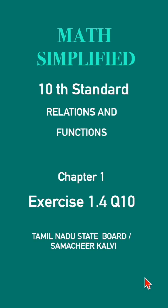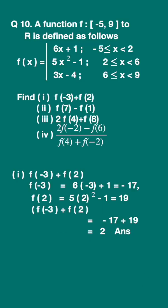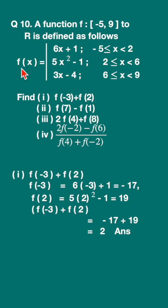Exercise 1.4, question 10. A function f from [-5, 9] to R is defined as follows: f(x) = 6x + 1 when -5 ≤ x < 2; f(x) = 5x² - 1 when 2 ≤ x < 6; f(x) = 3x - 4 when 6 < x < 9.